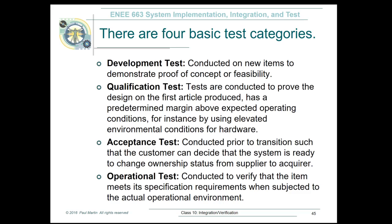When it comes to verification as well as validation, there are actually different types of tests. Your development test would probably be verification, where you're trying to demonstrate that an item can actually work the way you designed it. The qualification test is where you prove that the article has gone through the manufacturing process and comes out working the way you intended. Acceptance test is where you're transitioning your system to a customer — you run a test for the customer to feel comfortable. A lot of times that's validation. And then operational test is where you actually submit your system to an operational environment — that can be part of acceptance testing and part of your validation.